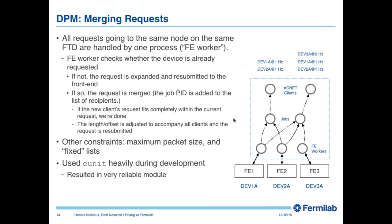Since ACNET is a UDP-based protocol, we have maximum packet size constraints. As we expand requests and replies to front ends, the front-end worker may split a request into two or three sub-requests to stay within limits. We also have the concept of fixed lists — where a client declares its data stream cannot be interrupted or restarted — in which case we won't merge requests with a fixed list unless the lengths and offsets fit exactly.